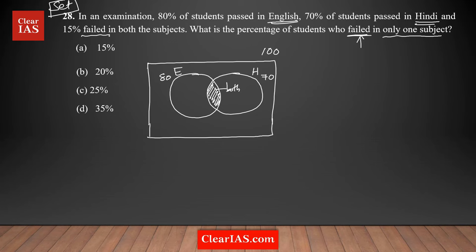It's given that 15% failed in both subjects — 15% of 100 is 15, so 15 of them failed in both subjects. You should have a clear idea where to write this 15 in the figure. Failed in both subjects means outside both circles — this region outside both circles represents the students who failed in both subjects.